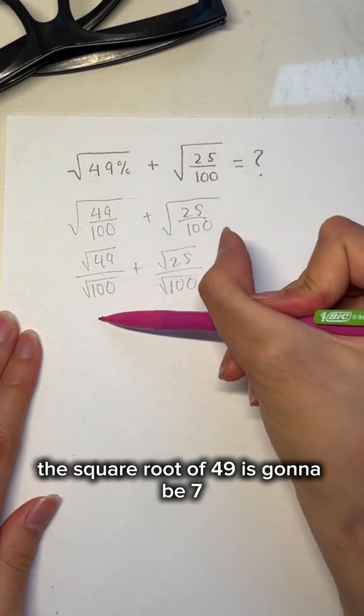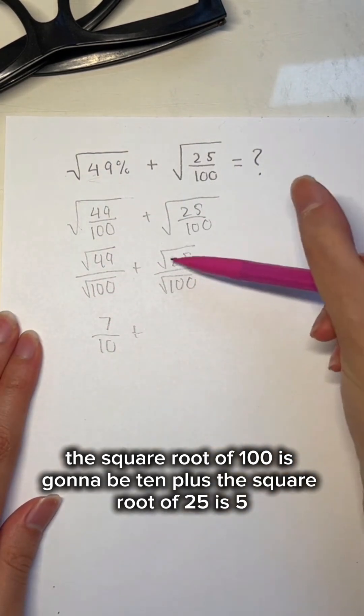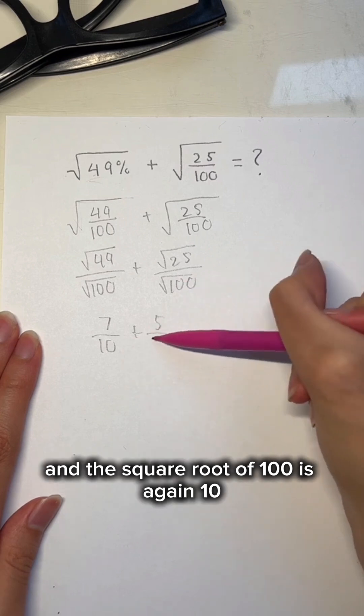The square root of 49 is going to be 7. The square root of 100 is going to be 10. Plus the square root of 25 is 5, and the square root of 100 is again 10.